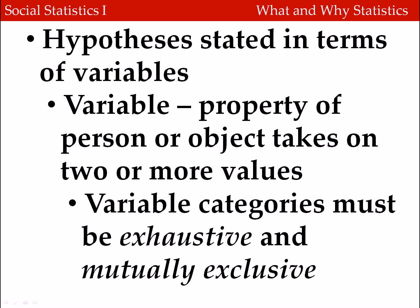We're going to state a set of formal hypotheses in terms of a set of variables. A variable is a property of a person or object that takes on two or more values — that is, it varies. Variable categories have to meet two criteria: first, they have to be exhaustive, meaning they cover every possible outcome; and second, they have to be mutually exclusive, so that each person fits into one and only one category of the variable.